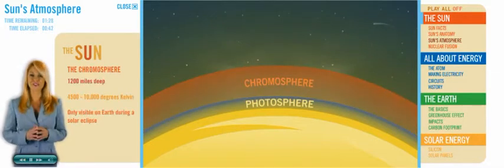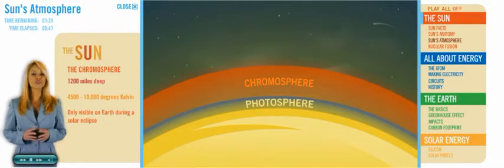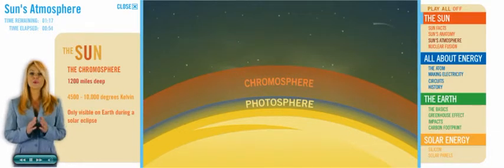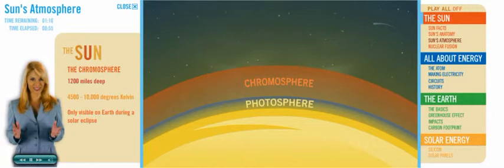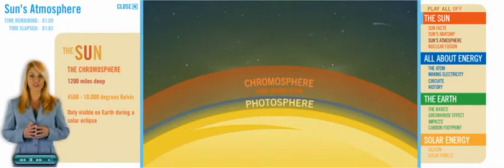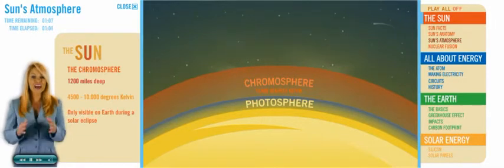Things are very different in the next layer, the chromosphere. Instead of temperatures falling, as the distance from the Sun's core increases, the opposite is true. The chromosphere extends from the photosphere about 1,200 miles, and as we move from the top edge of the photosphere outward, the temperature rises from 4,500 degrees Kelvin to about 10,000 degrees Kelvin.